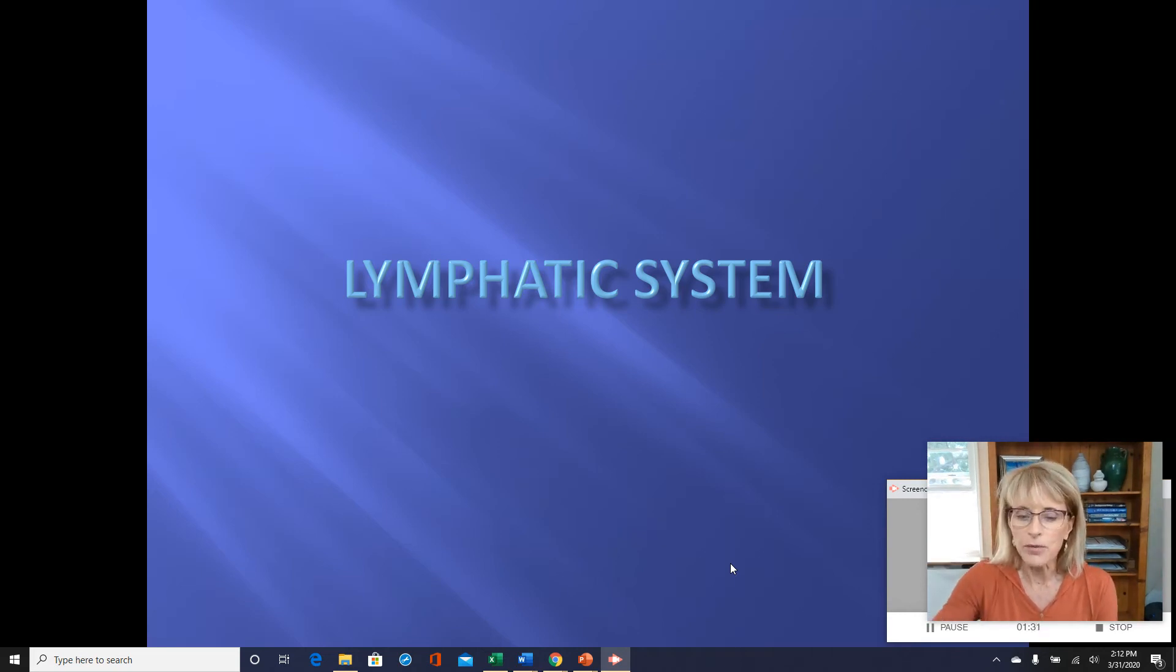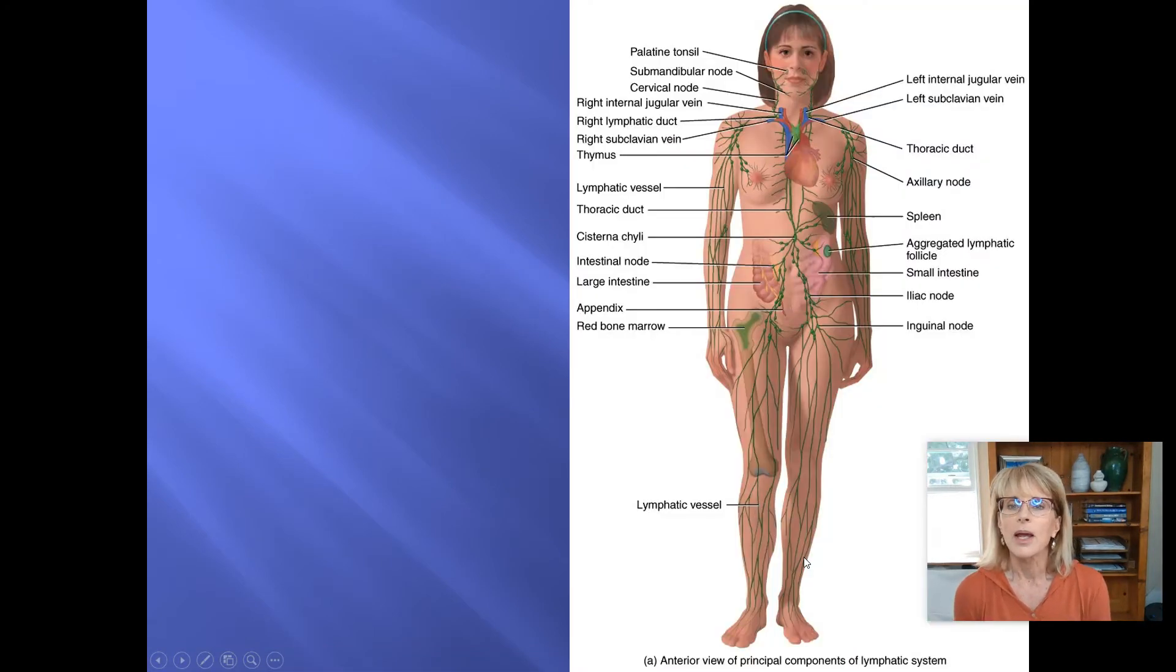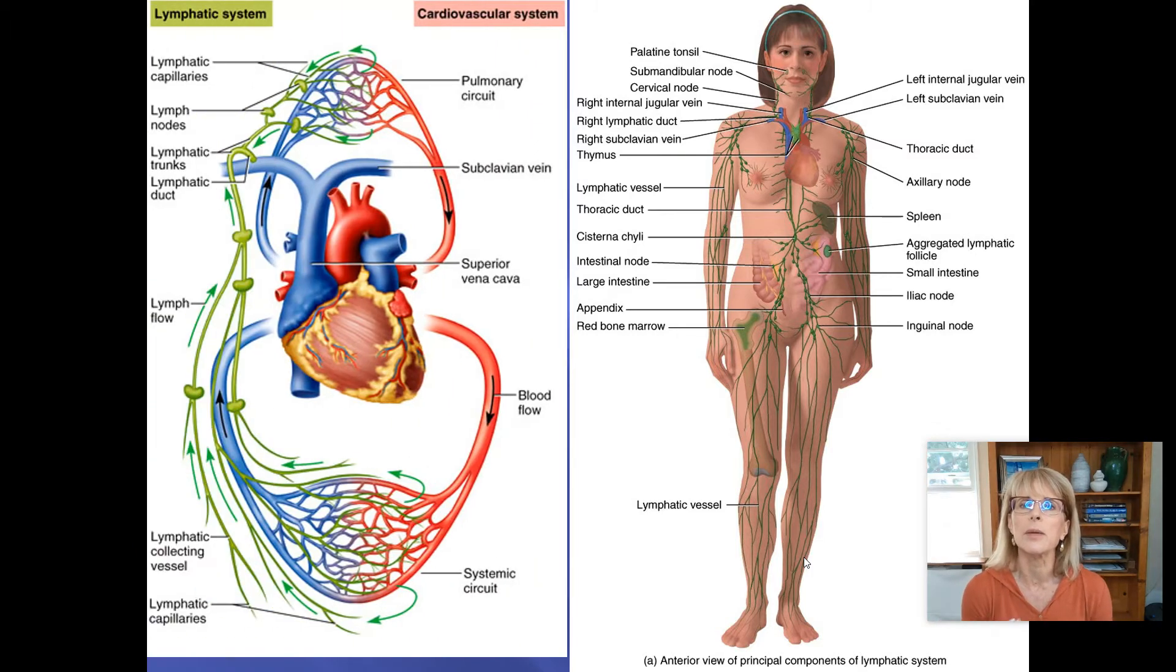So the lymphatic system is our secondary transportation system. What is it transporting? It's actually transporting a substance known as lymph. Lymph is a liquid that's very much like the plasma that is a part of your blood. It is essentially your blood plasma after the large proteins like fibrinogen and albumin have been filtered out.